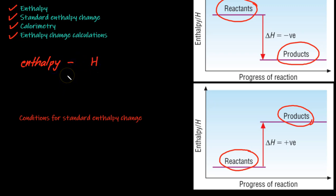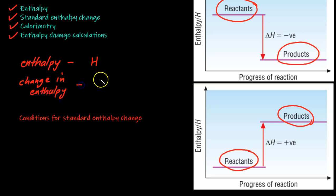The absolute value of the enthalpy of the reactants cannot be known, nor can the enthalpy of the products, but what can be measured is the difference between them — and that is the change in enthalpy, denoted by delta H.